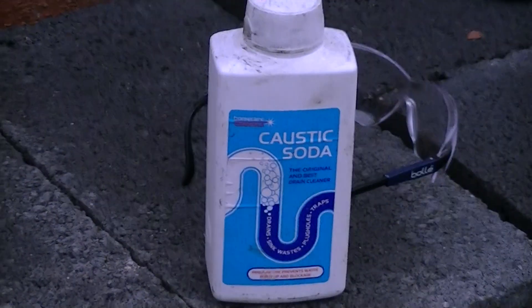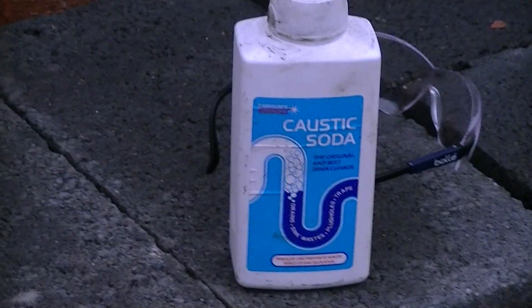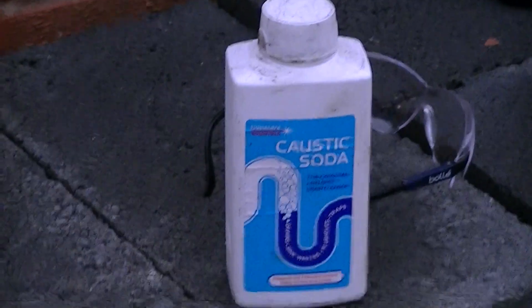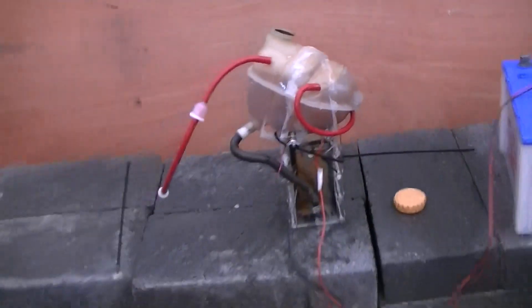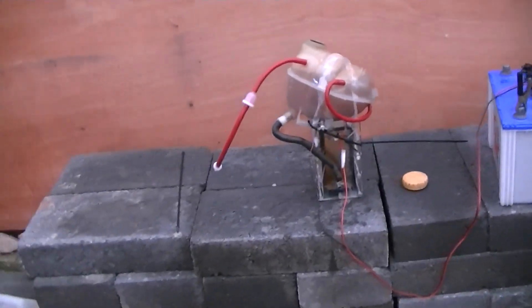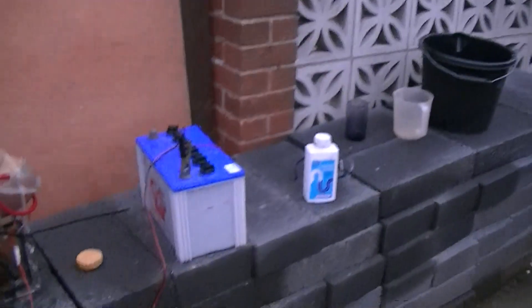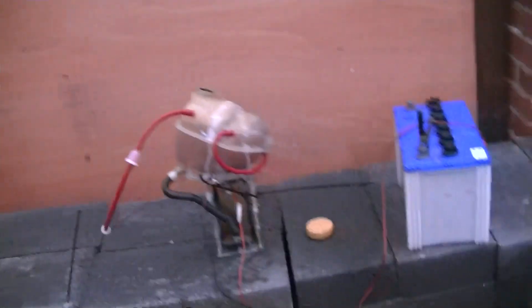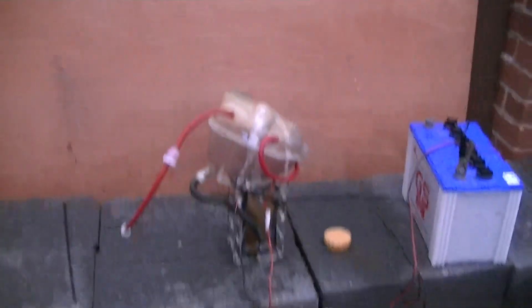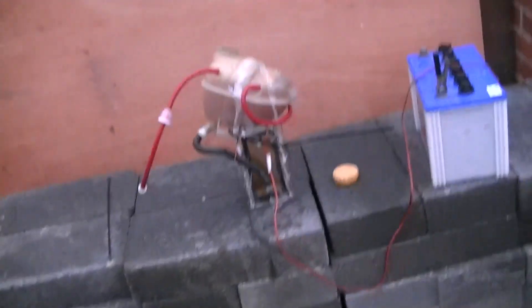Anyway, we've added some caustic soda. Yes, I know it is an alkali and what we were using last night was an acid, but we've drained all the water out and put fresh distilled water in it. Added some of the caustic soda, which is sodium hydroxide. And we're going to get it running.